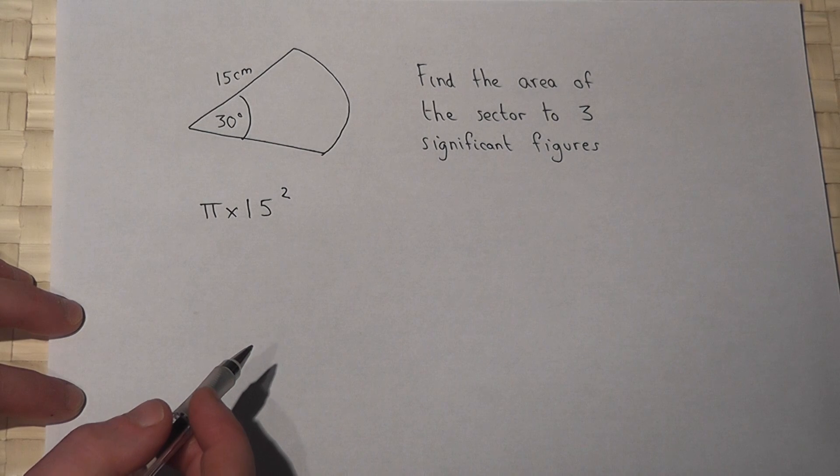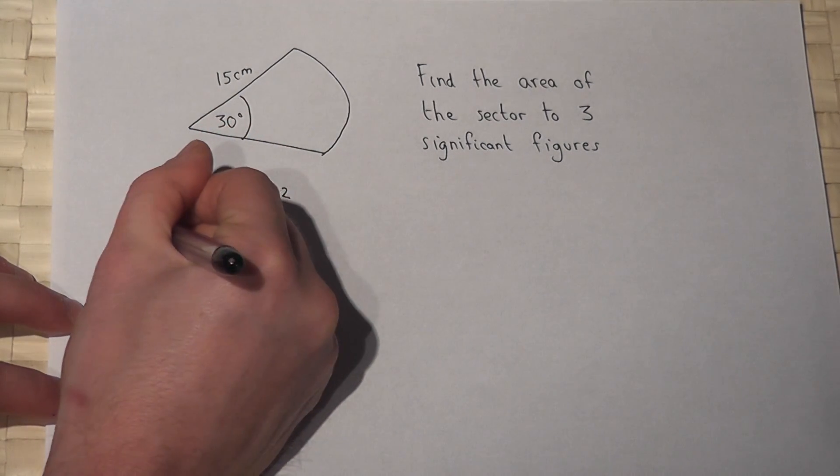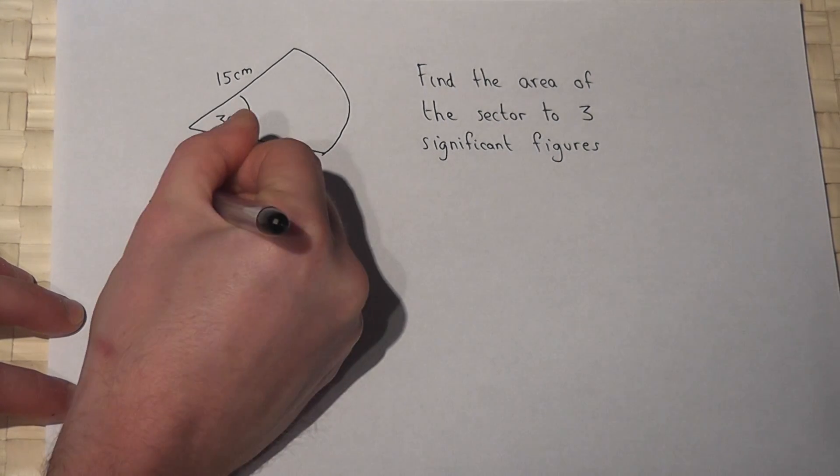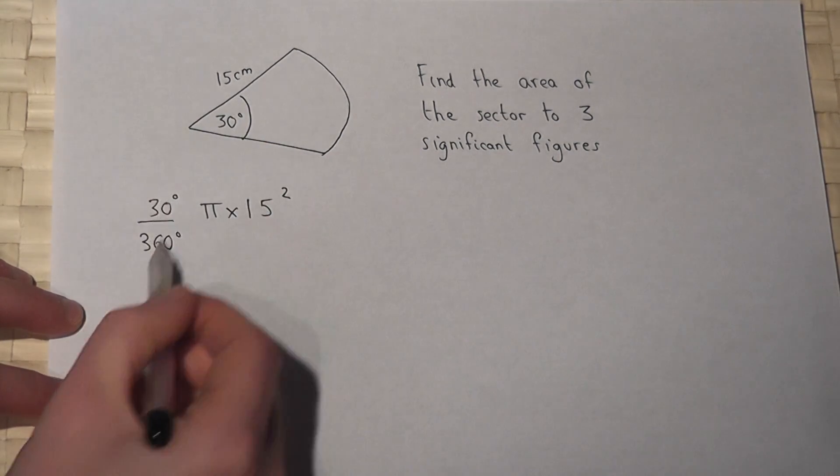However this is a fraction of a full circle and the fraction is 30 degrees out of a possible 360 degrees, i.e. 30 out of a full circle.